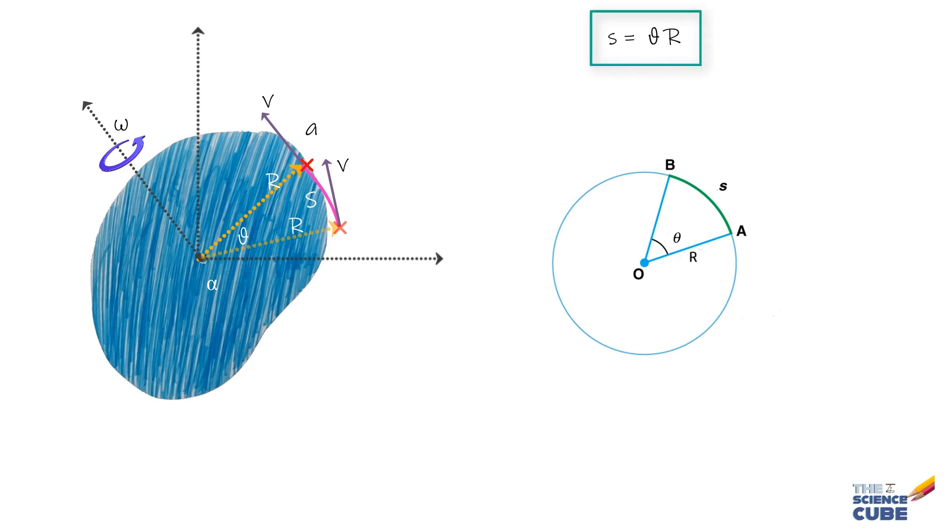This is a linear-angular relation because this is a linear variable and this angular. If we differentiate it with respect to time, keeping R constant, we get dS/dt equals d theta/dt times R. But we know that dS/dt is the magnitude of linear velocity of this point, and d theta/dt is nothing but the angular speed or omega of the rotating body and the point as well.